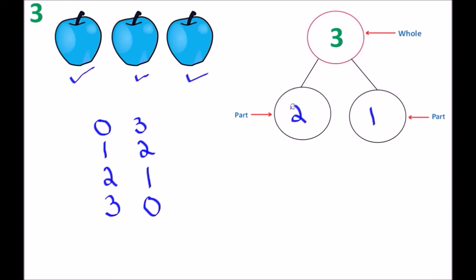So let's draw that on the number bond. Let me just erase what I had there before that I forgot to erase, and also let me get rid of this one over here. Now let me replace this with the correct information, which would be a number three on the left side and a zero on the right side. So for the number three, we were able to make four different number bonds.